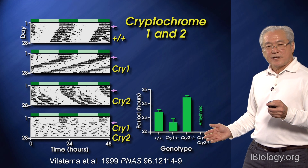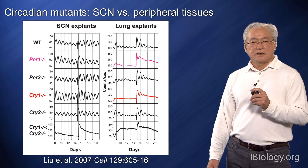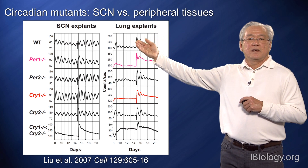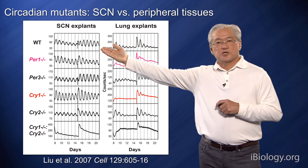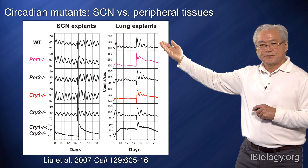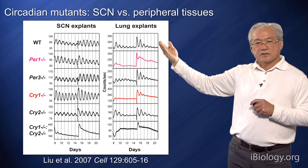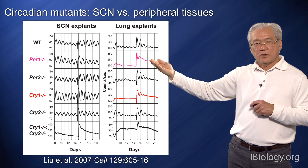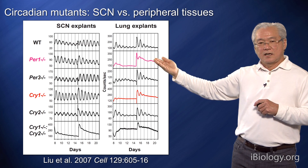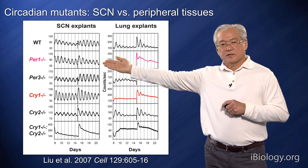So what we've done is to ask, what are the effects of these mutations — such as cry1 and cry2 — on the SCN clock and a peripheral clock? This example shows the lung. Using PER-luc imaging in a wild-type mouse for the SCN and for lung, both tissues have very nice rhythms of PER-luciferase. But if we knock out either per1 or cry1, this leads to a strong reduction in the rhythm in the lung, but has very little effect in the suprachiasmatic nucleus.